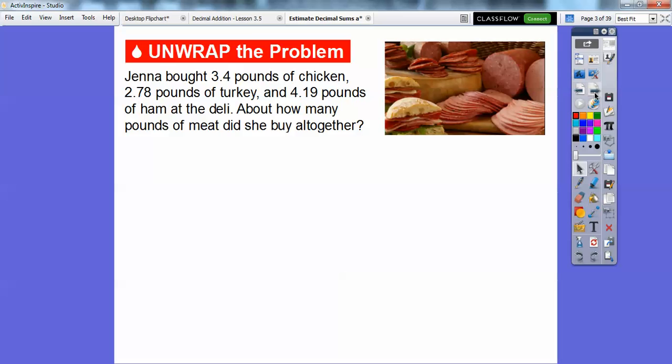Jenna bought 3.4 pounds of chicken, 2.78 pounds of turkey, and 4.19 pounds of ham at the deli. About how many pounds of meat did she buy altogether? We're going to use rounding to estimate. Round to the nearest whole number, and then add.